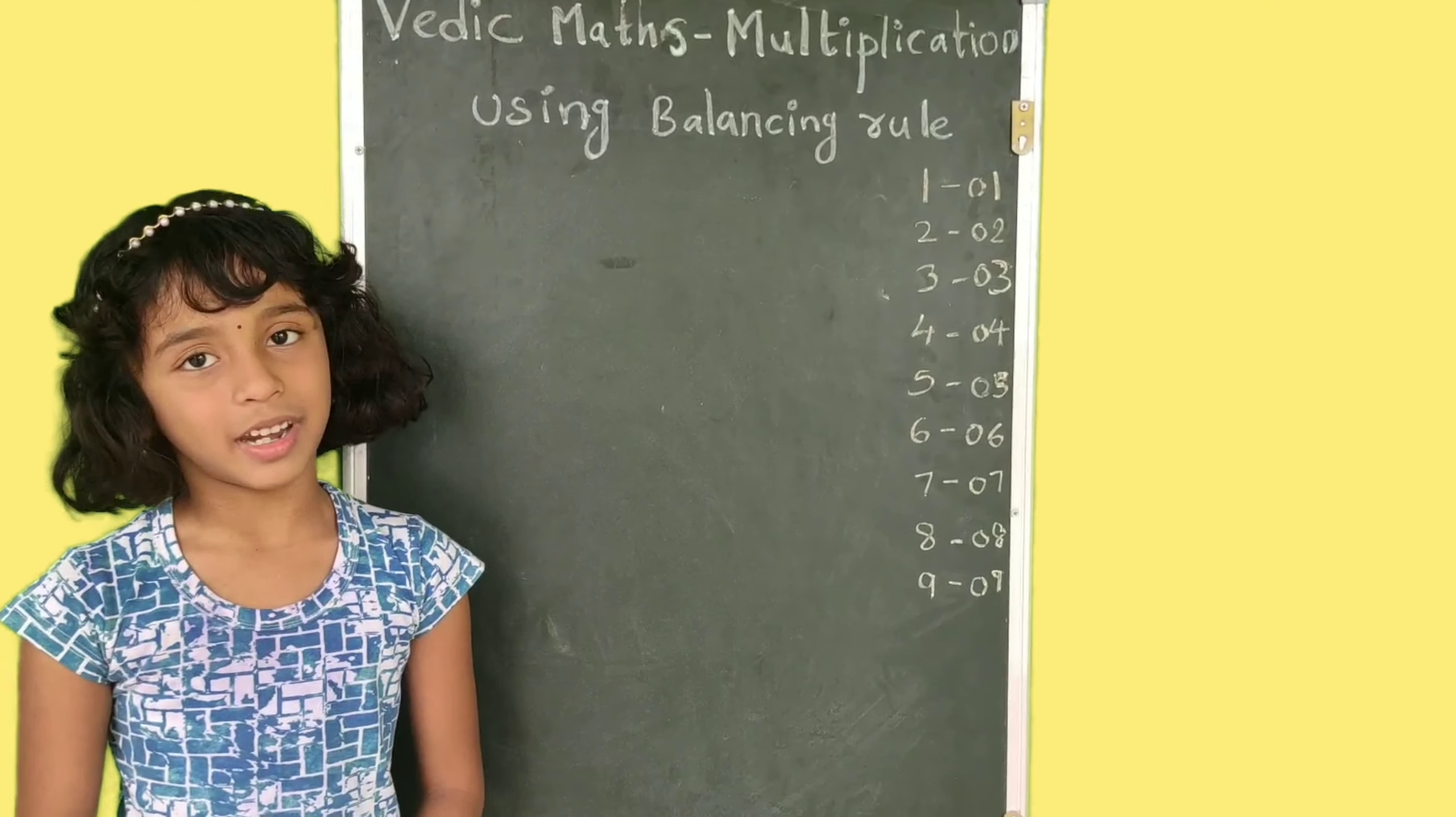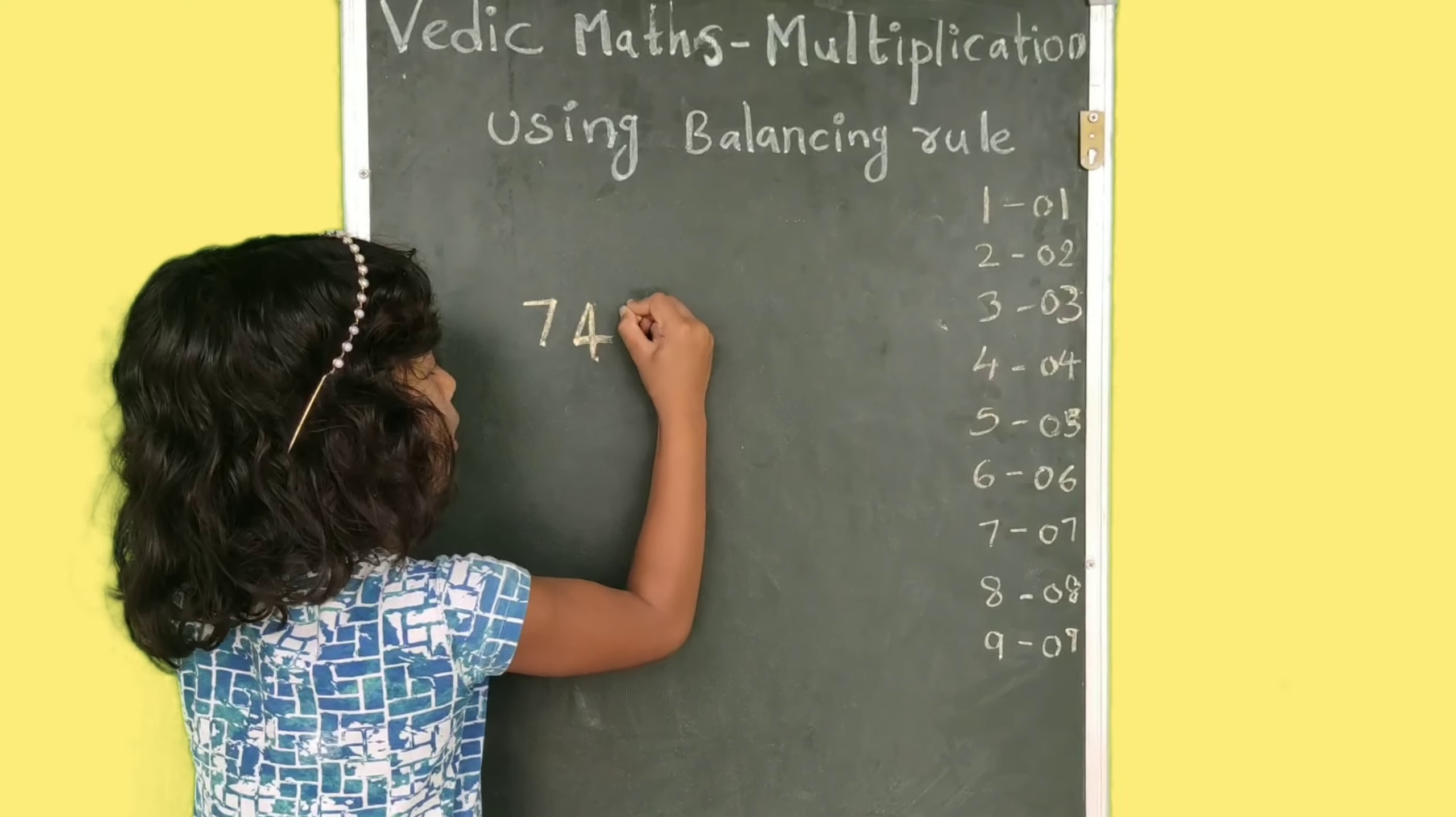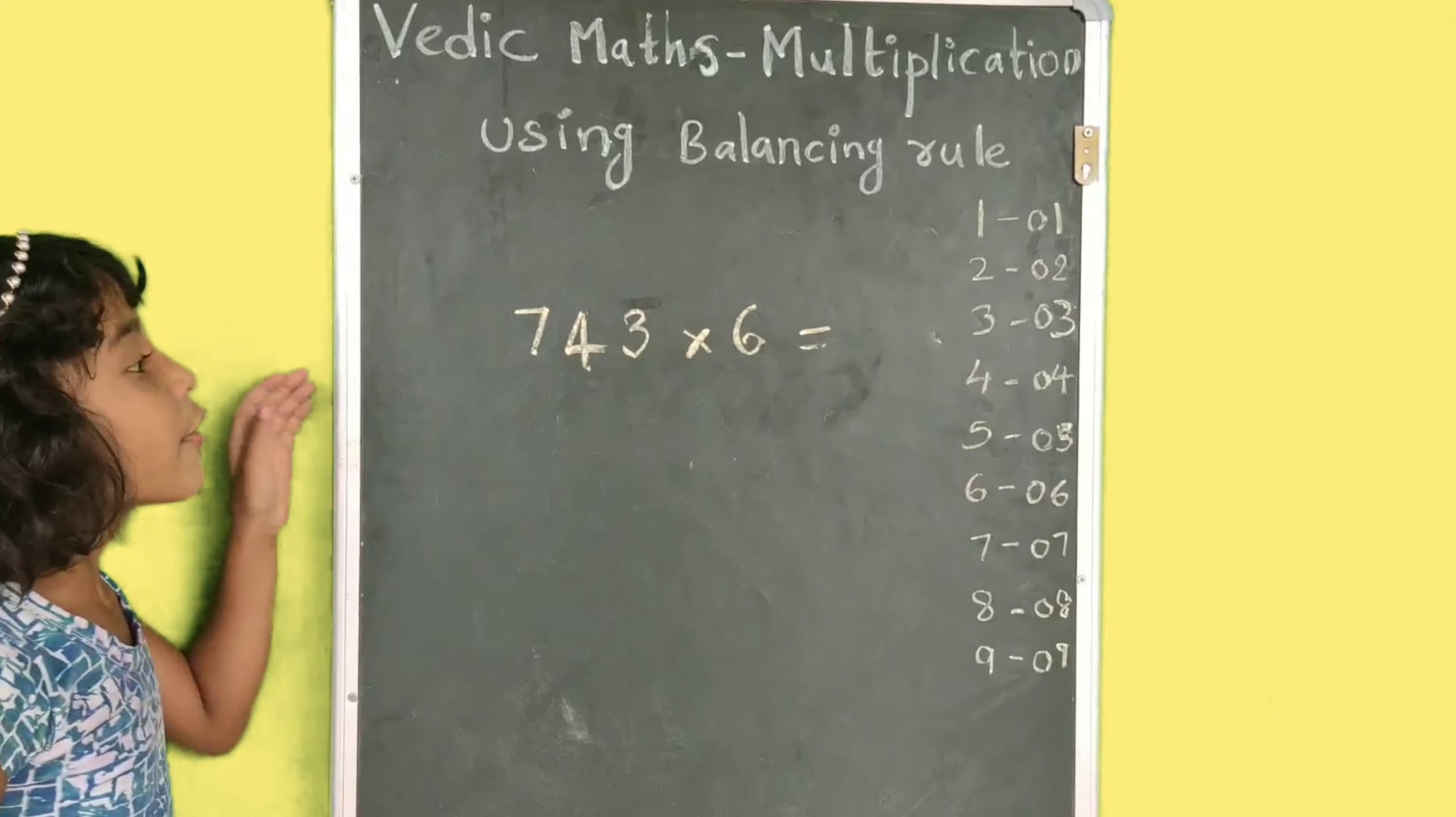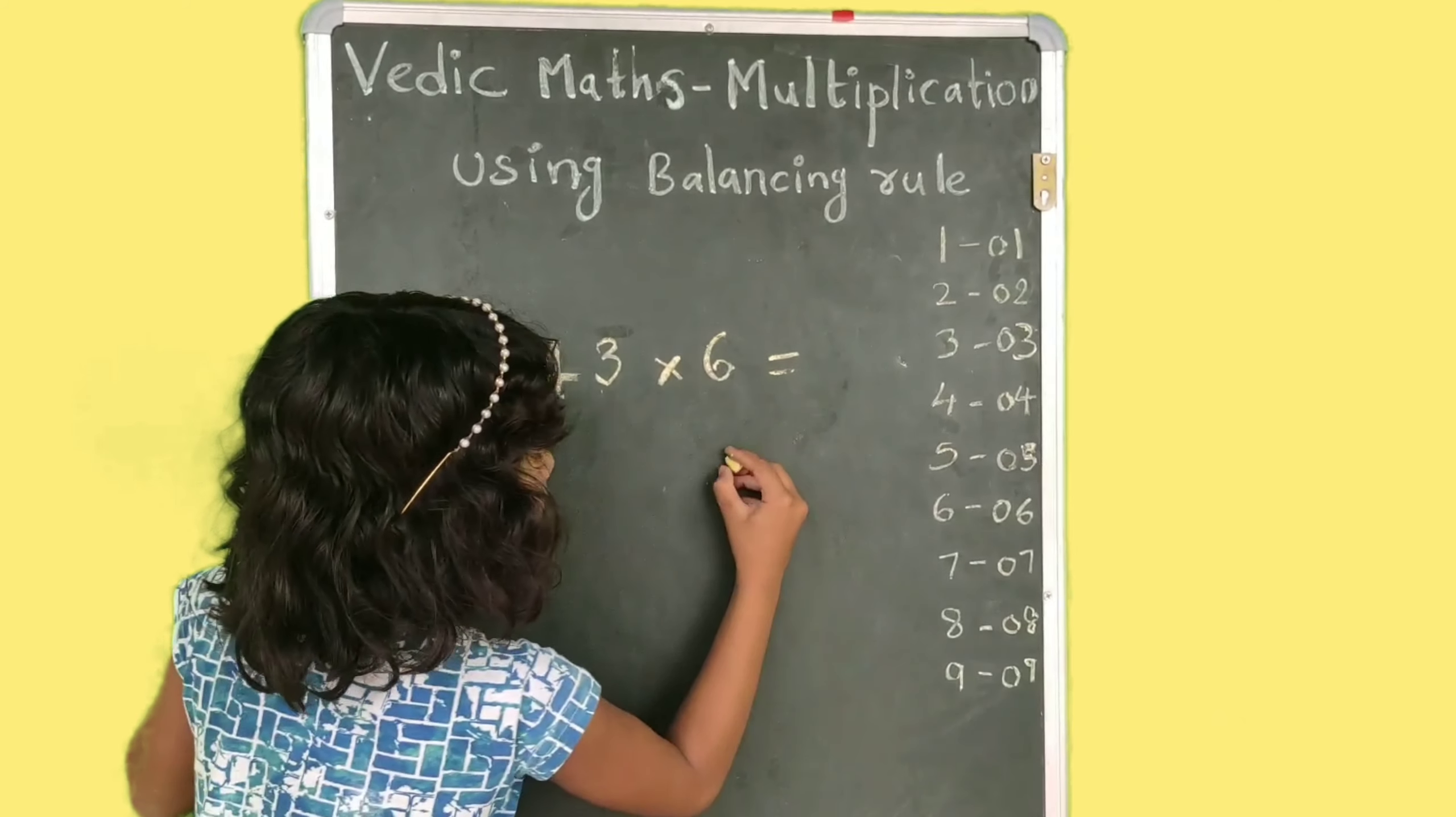Friends, ikpdu manam maalake e3 ni multiply chedhaan. 743 multiply 6. Friends, ikpdu manam e6 ni 3 ni multiply chedhaan. 6, 3, sir, 18.